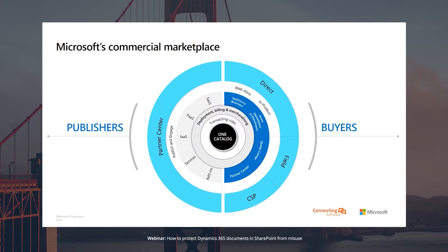Let's start with talking about the commercial marketplace. On the left side, we have the publishers, also known as the partners — companies or individuals who have solutions for the cloud. The partners and publishers go into the Partner Center, a portal where they can manage their offerings. We have different offerings in Partner Center: SaaS, PaaS, IaaS, solution as a service, platform as a service, in addition to actual services, consulting services, and add-ins.